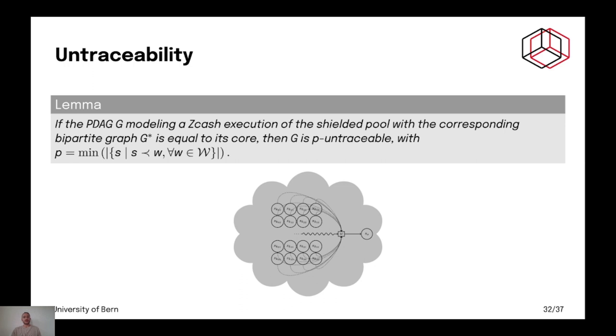So, that means that your untraceability set for a transaction is any state that was previously produced. And for Zcash execution, it's the smallest witness again. So, it's P untraceable with the smallest witness. And each witness takes all the previously produced states as an input.